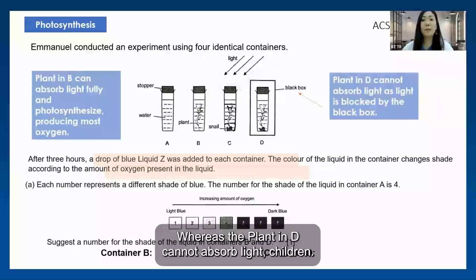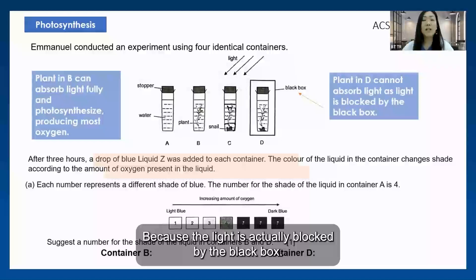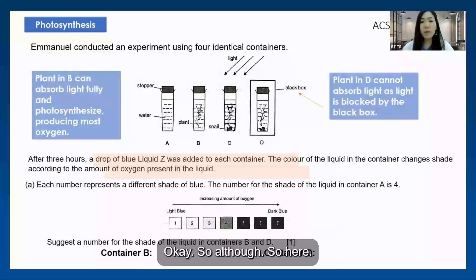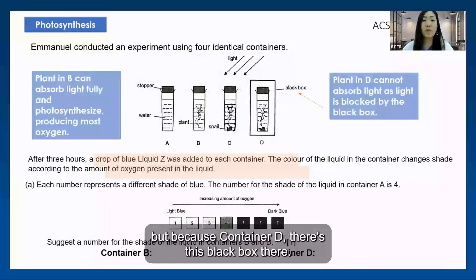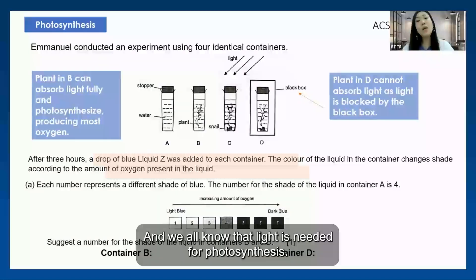Whereas the plant in D cannot absorb light because the light is actually blocked by the black box. Although all of them are exposed to light, container D has this black box that blocks the light, and we all know that light is needed for photosynthesis.